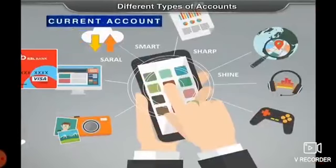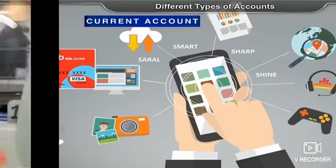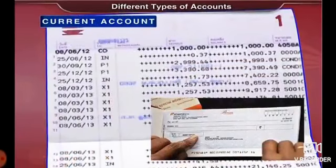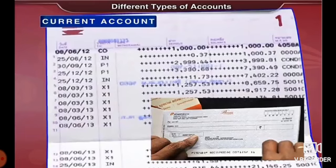First, we will learn about the current account. A current account is mainly for traders and persons who deal in money on a daily basis. An account holder can deposit or withdraw money any number of times in a day. The bank provides a passbook and, on demand, a checkbook. Remember, the bank does not pay any interest on money in this type of account.